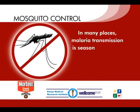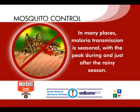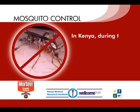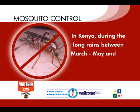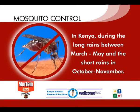In many places, malaria transmission is seasonal, with a peak during and just after the rainy season when mosquito breeding is at its highest. In Kenya, this would be during the long rains between March and May and the short rains between October and November.